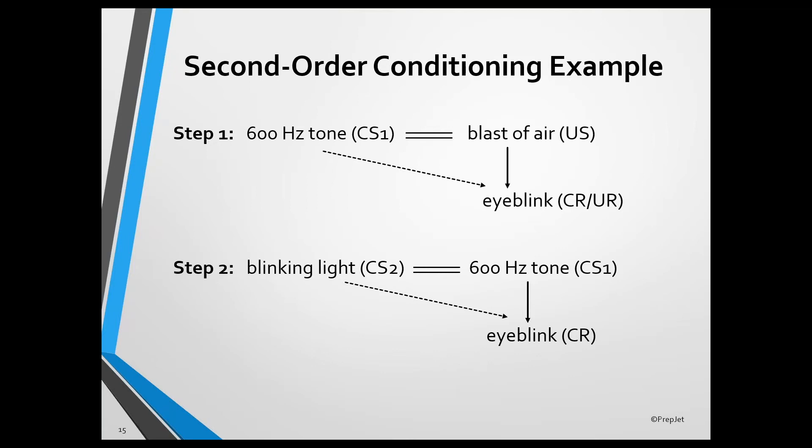During the second step, the 600 Hertz tone is treated like an unconditioned stimulus, and a new neutral stimulus — a blinking light — is repeatedly presented with the 600 Hertz tone. As a result, the blinking light also becomes a conditioned stimulus, and when presented alone, elicits a conditioned response.